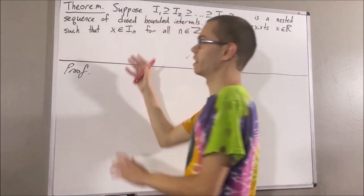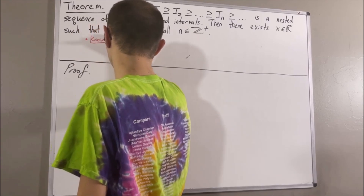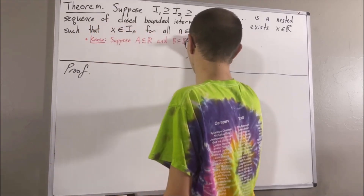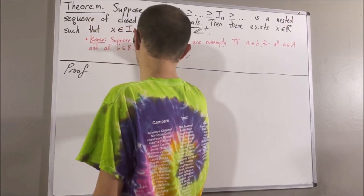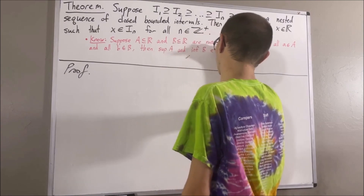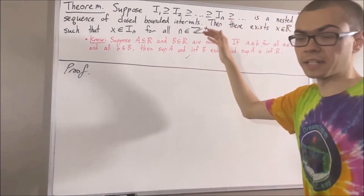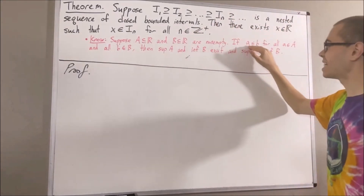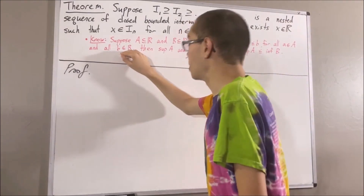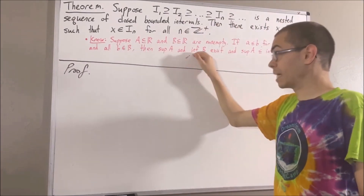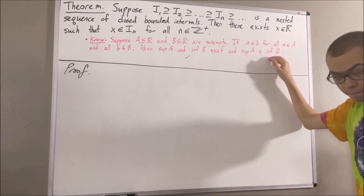In proving this theorem, we are going to use the following preliminary result: if a is less than or equal to b for all a in A and all b in B, then the supremum of A and the infimum of B exist, and the supremum of A is less than or equal to the infimum of B.